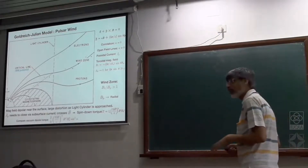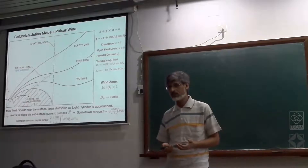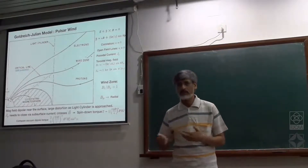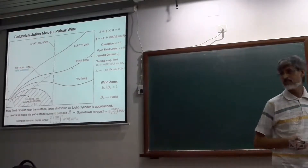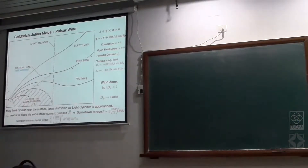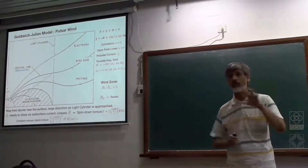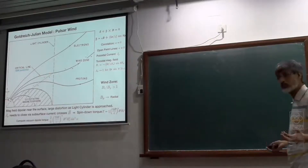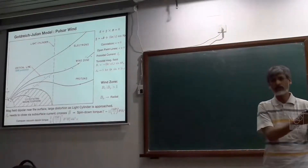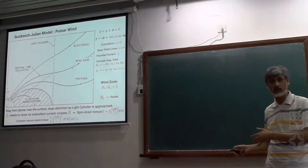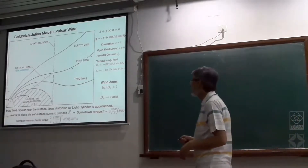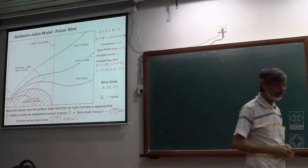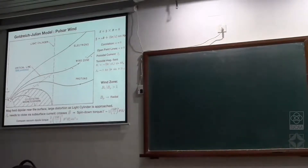Remember, there are charges of both signs in different regions, but they are all moving in the same direction. So when you integrate over the magnetosphere, this effect is quite small. But depending on how you populate the magnetosphere, the values could be different, because it is not necessary that the entire magnetosphere is everywhere populated with Goldreich-Julian charge.